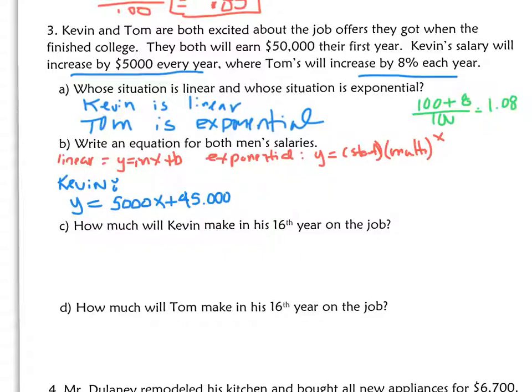That is Tom's multiplier. What's the starter? Well, we have to take $50,000 and divide it by 1.08. When you do that, what you get is y equals 46,296, his starter, times 1.08 to the power of x.